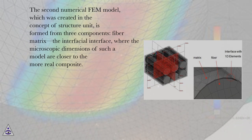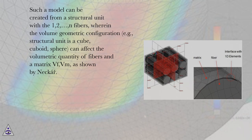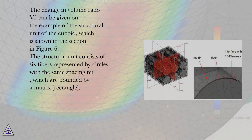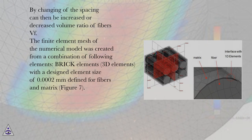The second numerical FEM model, created in the concept of a structural unit, is formed from three components: fiber, matrix, and the interfacial interface, where the microscopic dimensions of such a model are closer to the real composite. Such a model can be created from a structural unit with 1, 2, or n fibers, wherein the volume geometric configuration — for example, a cube, cuboid, or sphere — can affect the volumetric quantity of fibers in the matrix VF and Vm, as shown by Necker. The structural unit of a cuboid consists of six fibers represented by circles with equal spacing, bounded by a matrix rectangle. By changing the spacing, the volume ratio of fibers VF can be increased or decreased.